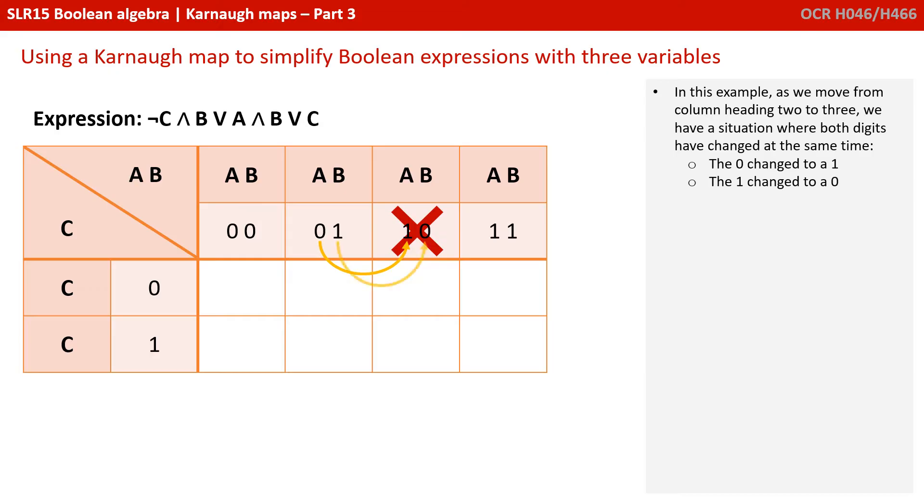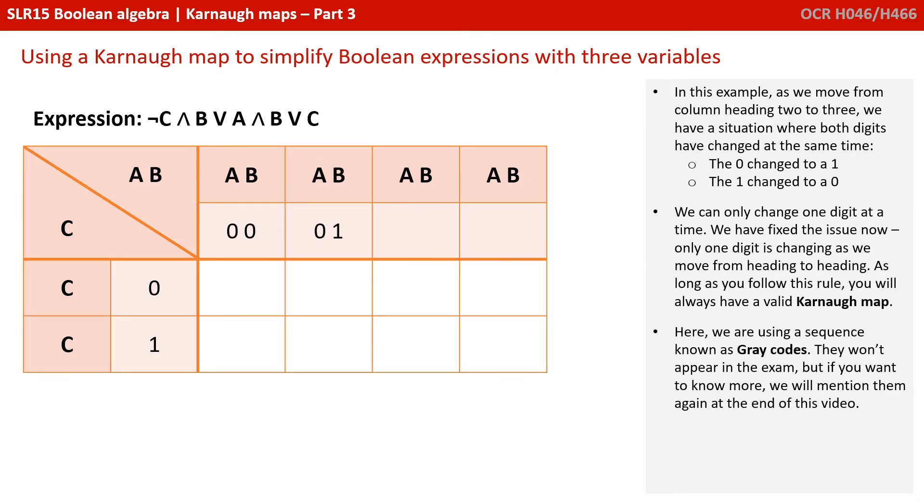In this example, as we move from column heading 2 to 3, we have a situation where both digits have changed at the same time. The first is a 0 and it's changed to a 1, and the second is a 1 and it's changed to a 0. And this is not allowed. We can only change one digit at a time, so we've fixed the issue now. Only one digit is changing as we move from heading to heading.